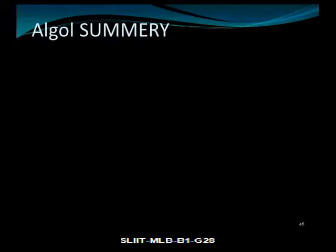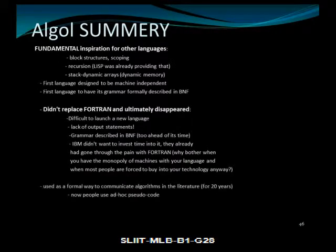Here's a summary of ALGOL, invented after FORTRAN and a fundamental inspiration for other languages. Key features included block structure, scoping, recursion — which LISP was already providing — stack dynamic arrays, and dynamic memory. It was the first language designed to be machine-independent and the first to have its grammar formally described in BNF. It didn't replace FORTRAN and ultimately disappeared.